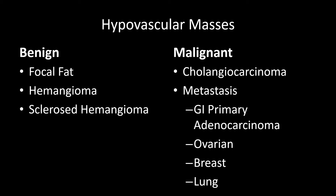In the benign category, focal fat can be surprisingly mass-like and misleading, particularly on CT imaging, and you're really going to lean on your in and opposed phase MRI imaging to make the diagnosis of focal fat. Hemangioma is the classic hypovascular mass — some may argue it's hypervascular, but its enhancement pattern is more similar to hypovascular masses. Sclerosed hemangioma is a very challenging diagnosis, almost a diagnosis of exclusion that should be made with biopsy, because its appearance is very similar to malignant hypovascular masses.